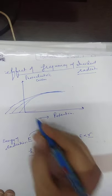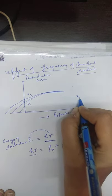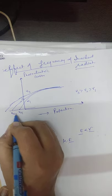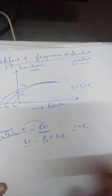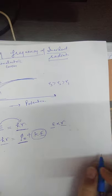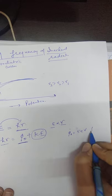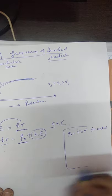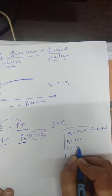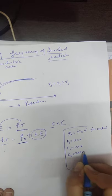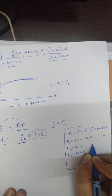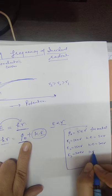With frequency, the number of electrons does not change, so the maximum current remains constant. The stopping potential is different for different frequencies. For example, suppose the work function of a metal is 5 eV, and we have three frequencies corresponding to energies of 10 eV, 15 eV, and 20 eV. After using 5 eV to overcome the work function, the kinetic energies are 5 eV, 10 eV, and 15 eV respectively.